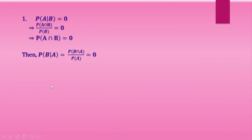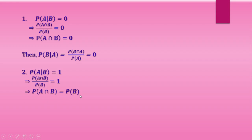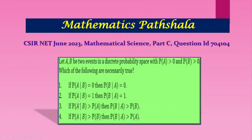Option 2: it is given that P(A|B) = 1. By the definition of conditional probability this implies P(A∩B) / P(B) = 1, which implies P(A∩B) = P(B). Then P(B|A) = P(B∩A) / P(A) = P(B) / P(A). Since P(B) / P(A) is not necessarily 1, option 2 is not correct.